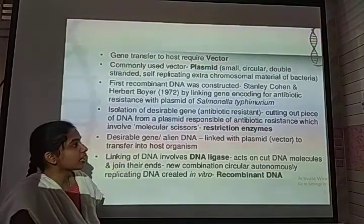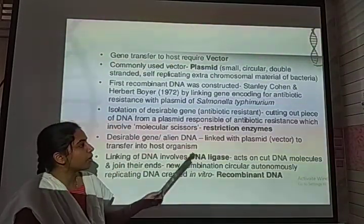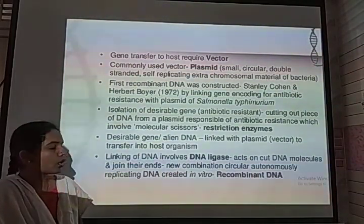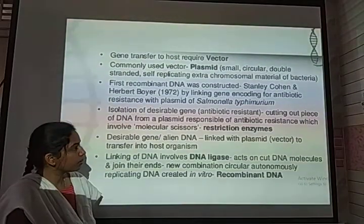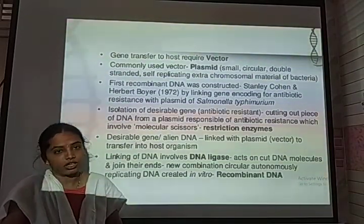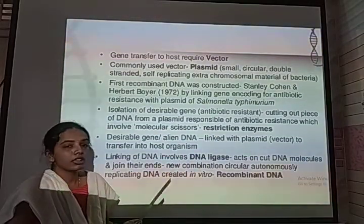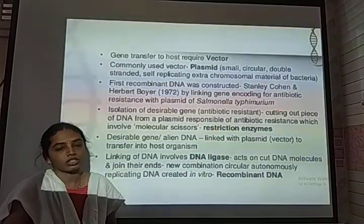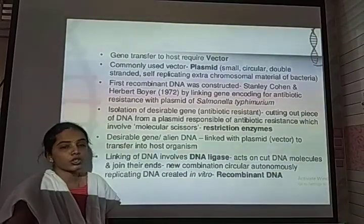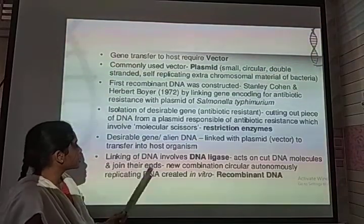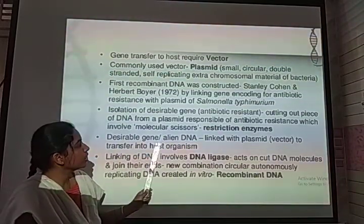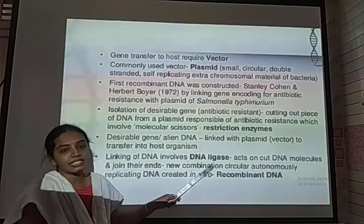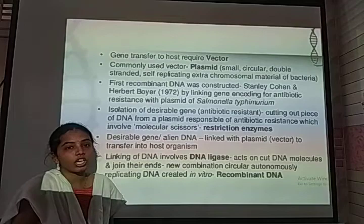The desired gene is cleaved by the help of an enzyme called restriction enzymes. Restriction enzymes are called molecular scissors because they are helpful for cutting specific strands. The restriction enzyme helps in cleaving double-stranded DNA at a specific location, resulting in two types of ends: sticky ends and blunt ends.